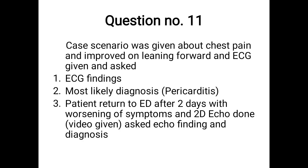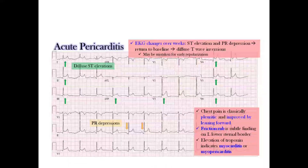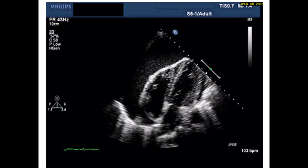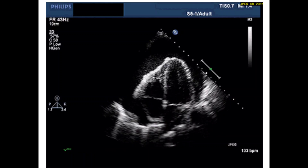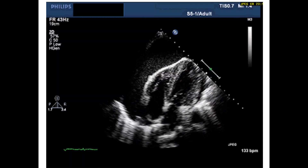The next question gave a case scenario of chest pain improving on leaning forward, with an ECG showing globally elevated ST segment and globally diffuse PR segment depression with tachycardia — these changes suggest acute pericarditis. The patient returned after two days with worsening symptoms; a 2D echo video was given showing pericardial effusion — collection of fluid around the pericardium and collapse of the right atrium and right ventricle — confirming pericardial effusion with tamponade physiology.